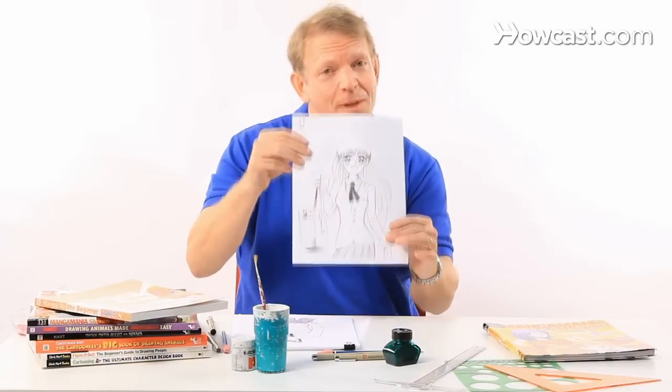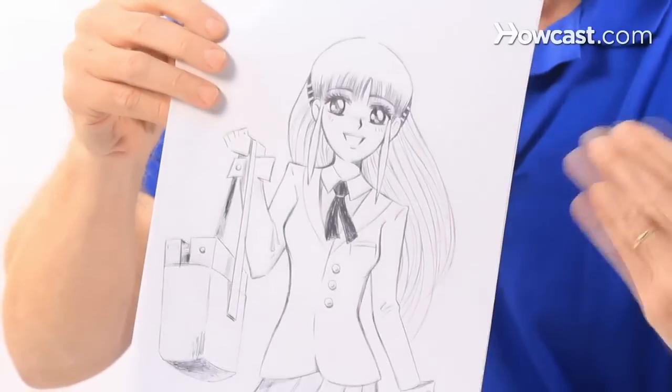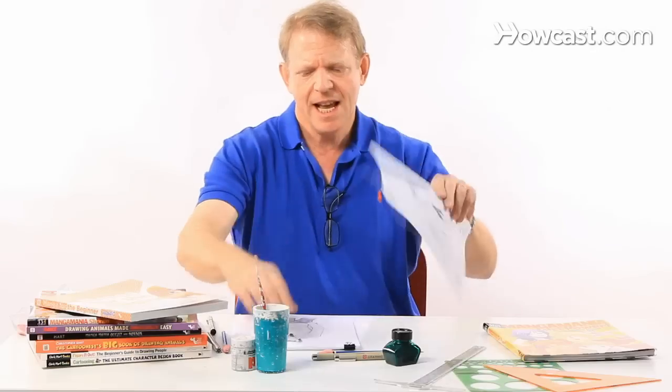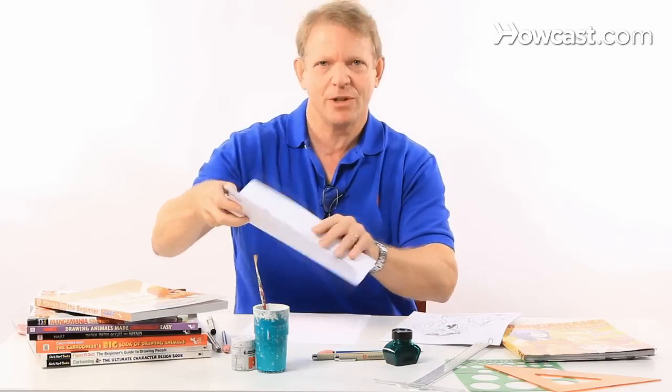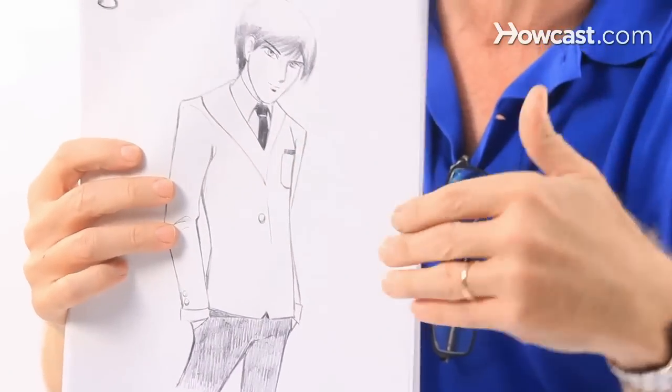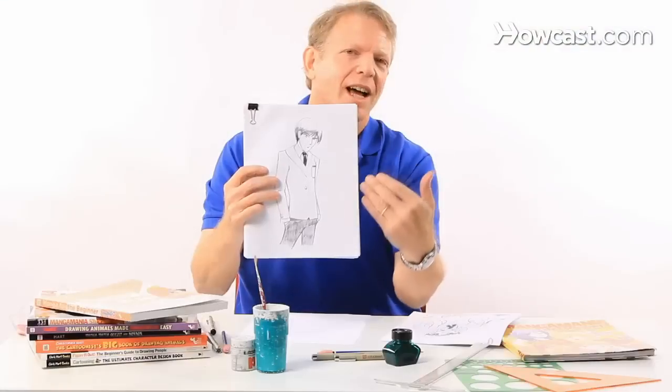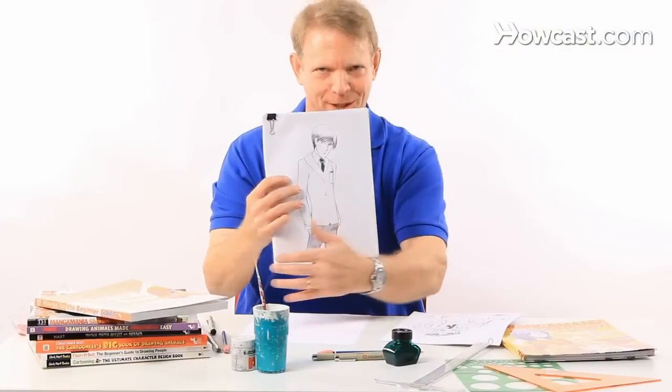So here is a school girl type that is a shoujo style. She's kind of young and perky, looking cute. And here is the bishoujo type, which is actually also a shoujo type genre, and he's the kind of good looking guy who is unattainable by the girls.